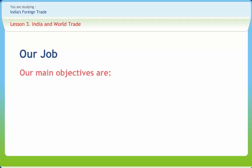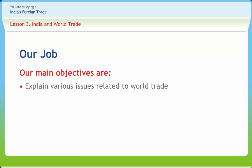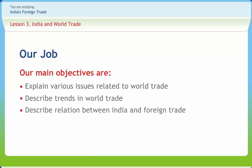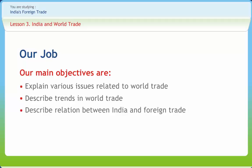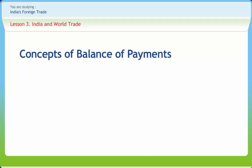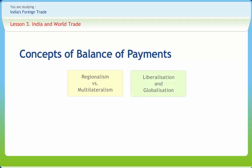After studying this lesson, you should be able to explain various issues related to world trade, describe trends in world trade, and describe the relation between India and foreign trade. The most significant issues in world trade include regionalism versus multilateralism, liberalization and globalization in foreign trade, electronic commerce and electronic data interchange, and environmental challenges.